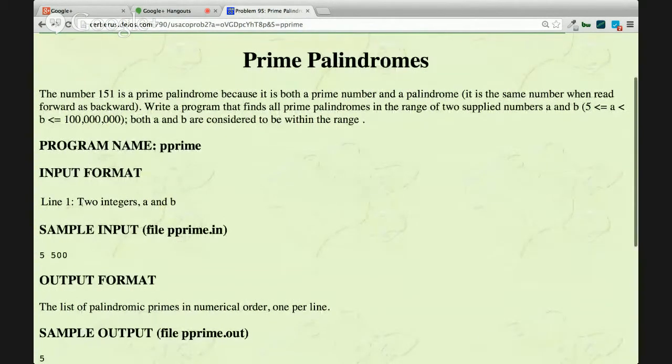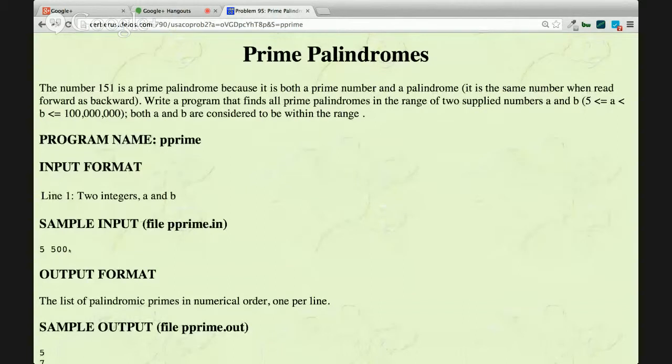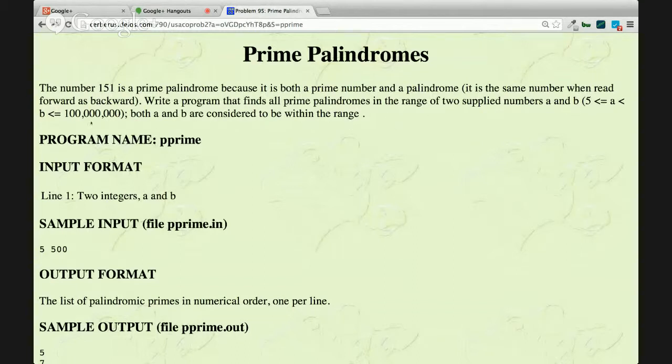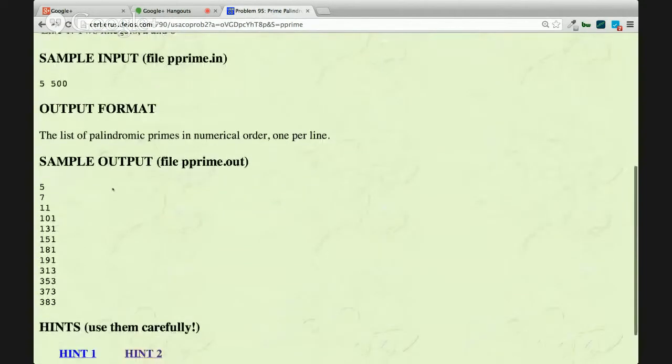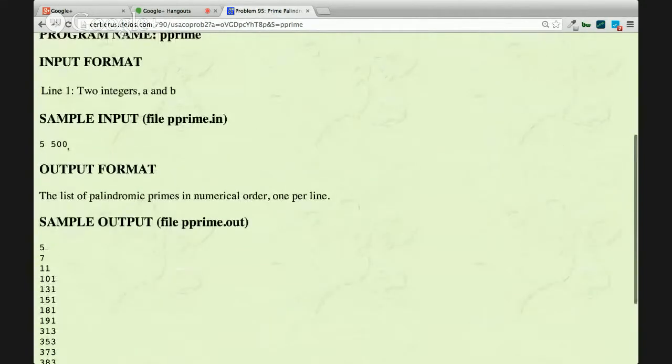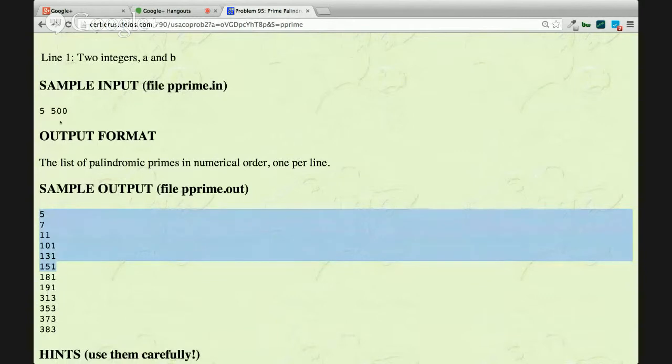So the input format actually has just two integers, which is A and B. As the question given here, the range between A and B is between 1 and this one is 100 million. So the size is between 5 and 100 million. And then the output format will be very simple, you just print out between A and B, the prime palindrome that exists between these two numbers, the input showing here, A and B.